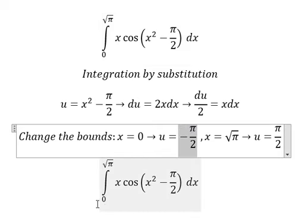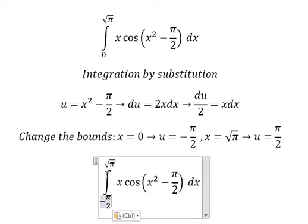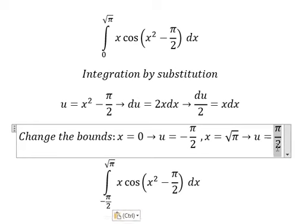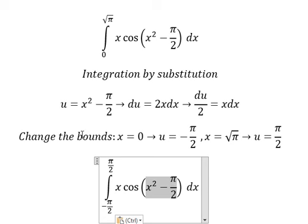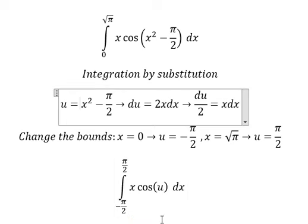So I will put this one to change for zero, this one we change for this one. This one we change for u, x dx we change for du over number two.